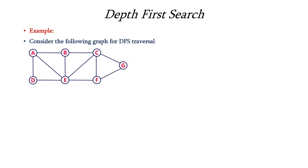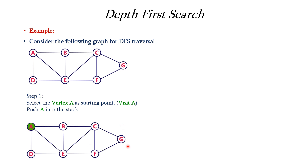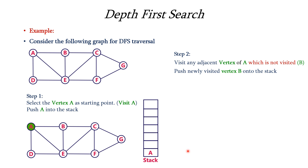Now let us consider an example. This is the graph used for implementing DFS traversal. It contains nodes from A to G. The first step is to select any vertex from the graph as the starting point. We are selecting A as the starting point and considering it as a visited node, so we push it into the stack. We have shaded A in green color to indicate it has been visited.